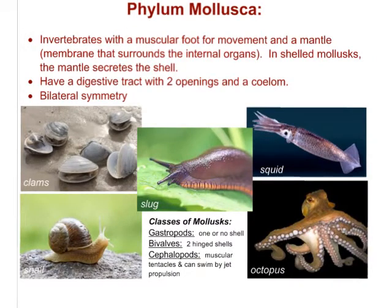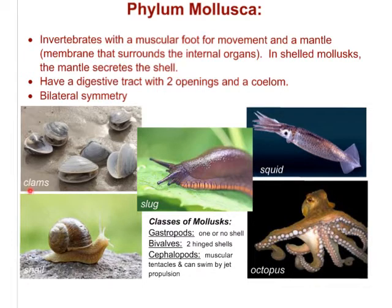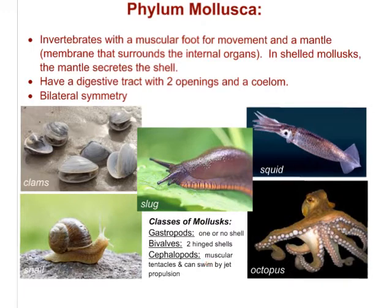Phylum Mollusca. Molluscs are invertebrates with a muscular foot for movement and what we call a mantle — a membrane that surrounds their internal organs. Shelled molluscs have a mantle that secretes their shell. Molluscs have a digestive tract with two openings; they are coelomates and bilaterally symmetrical. There are basically three classes of molluscs: gastropods, which have either no shell like the slug or one shell like the snail; bivalves that have two hinged shells like clams; and cephalopods, which have no shells but muscular tentacles and can swim by jet propulsion — squid and octopi.